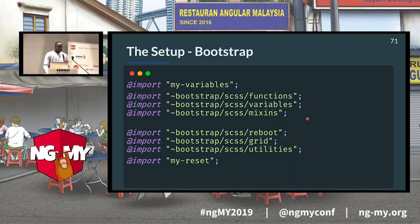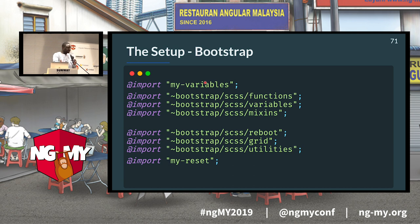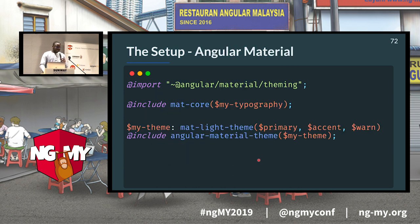For the Bootstrap setup, I import some Bootstrap Sass functions, variables, and mixins — these generate no CSS on their own. In a first file I can customize Bootstrap, for example overriding the default breakpoints. Then I import Reboot, the Grid, and the Utilities. There are minor tweaks needed to make everything work together, like removing the outline from buttons that Bootstrap Reboot adds by default.